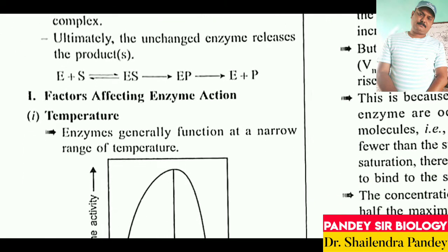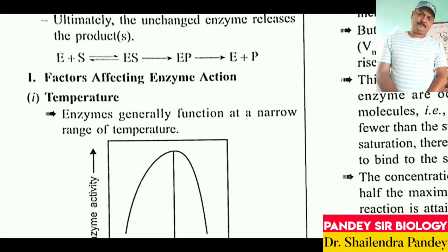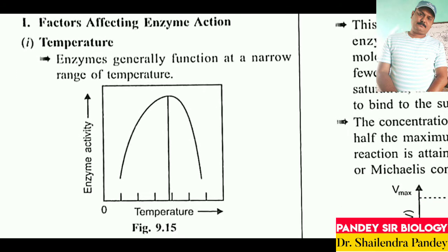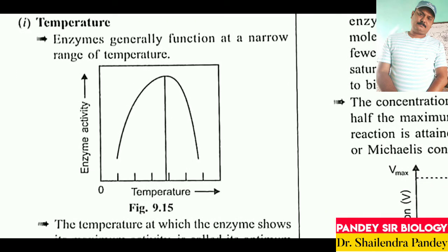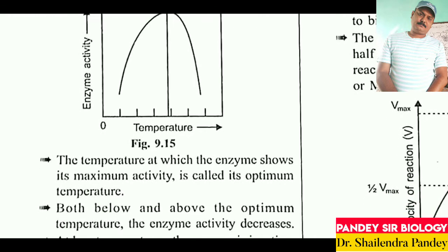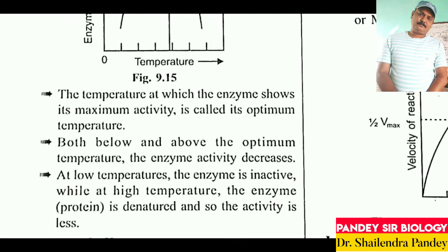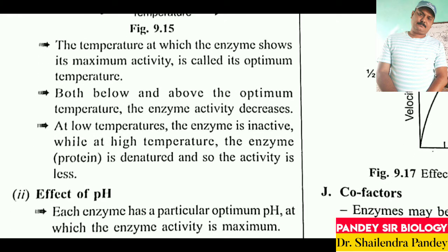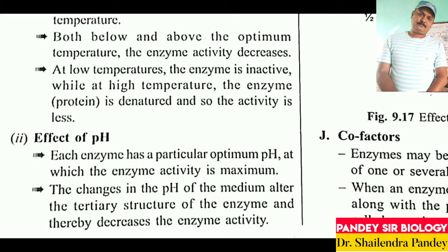Factors affecting enzymatic action — Temperature: Enzymes generally function within a narrow range of temperature. The temperature at which the enzyme shows its maximum activity is called the optimum temperature. Both below and above the optimum temperature, enzyme activity decreases. At low temperature the enzyme is inactive, while at high temperature the enzyme protein is denatured and activity is lost.